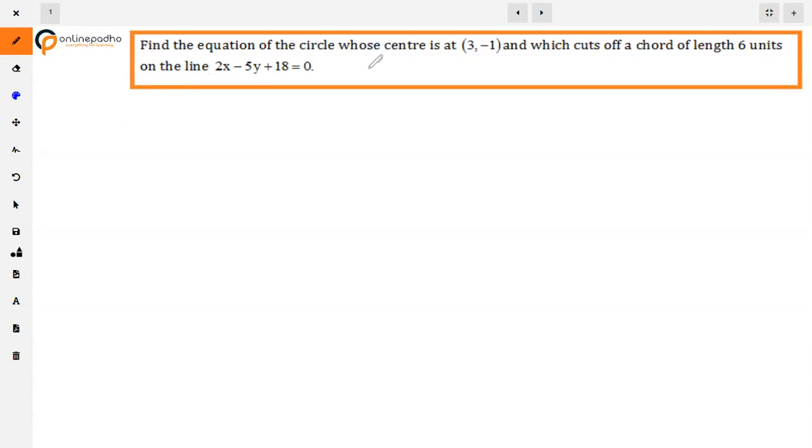The question is, find the equation of the circle whose center is at (3, -1) and which cuts off a chord of length 6 units on the line 2x - 5y + 18 = 0.